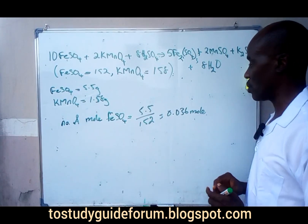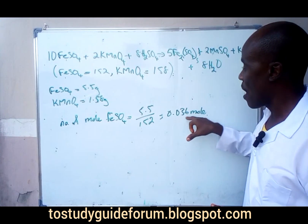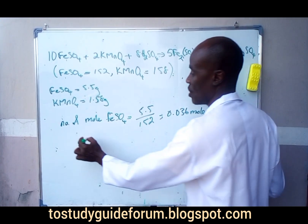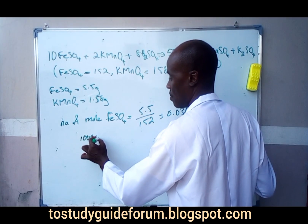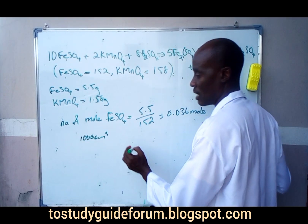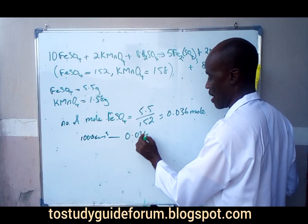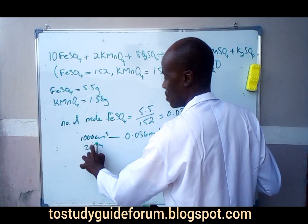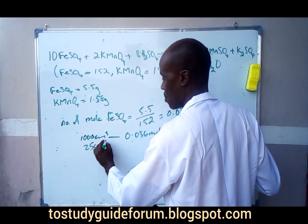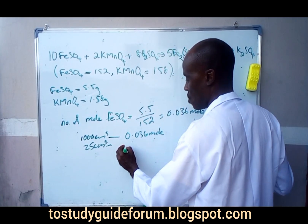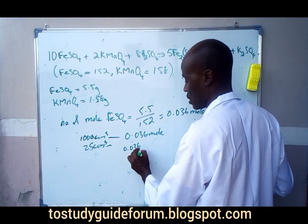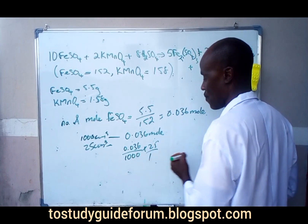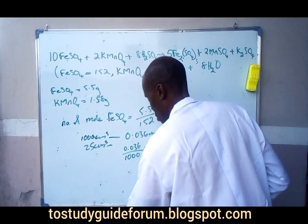The first thing we're going to find out here is the number of moles in 25 cm³, because what we have here is what is contained in 1000 cm³. That means 1000 cm³ contains 0.036 moles. Then 25 cm³ would be equal to 0.036 divided by 1000, times 25.